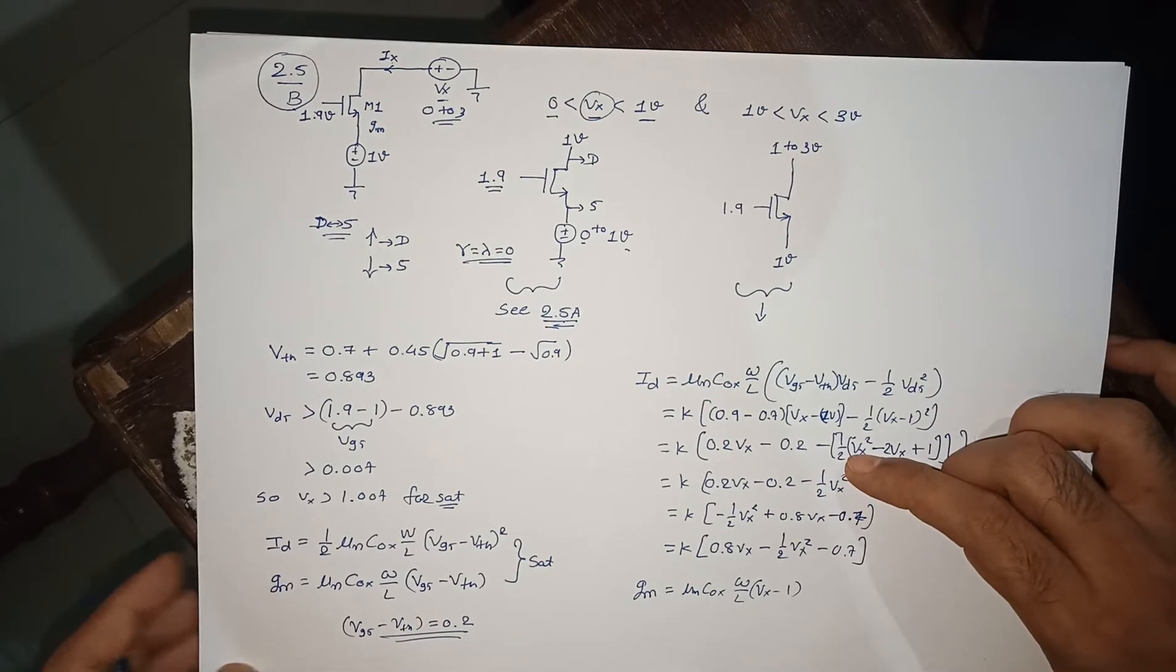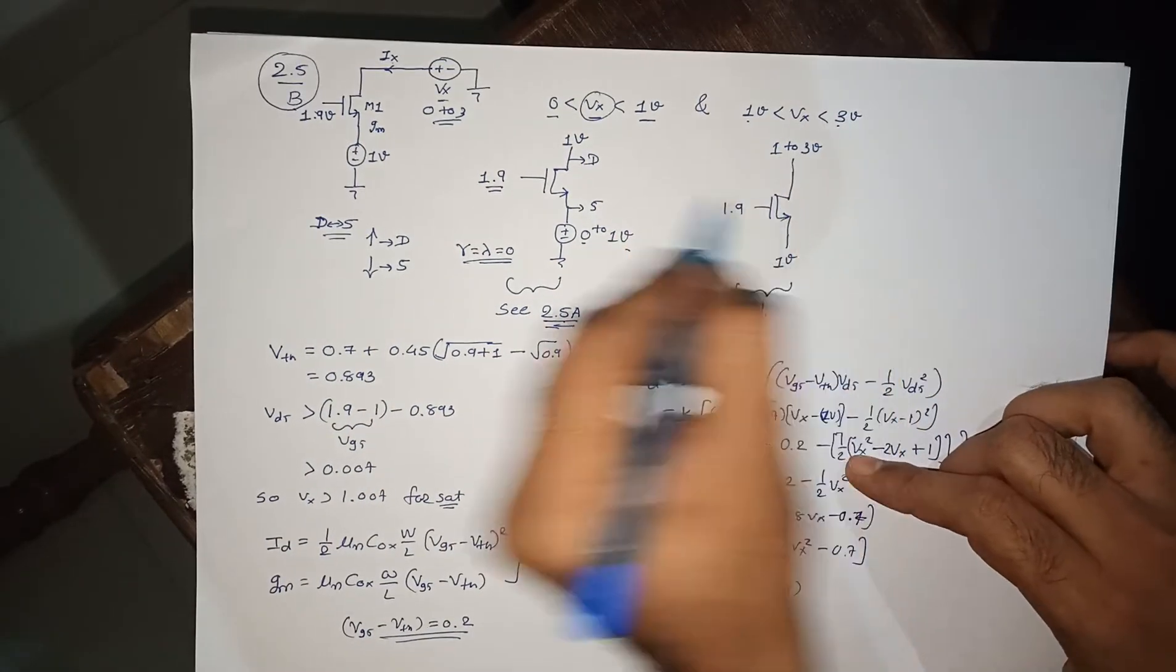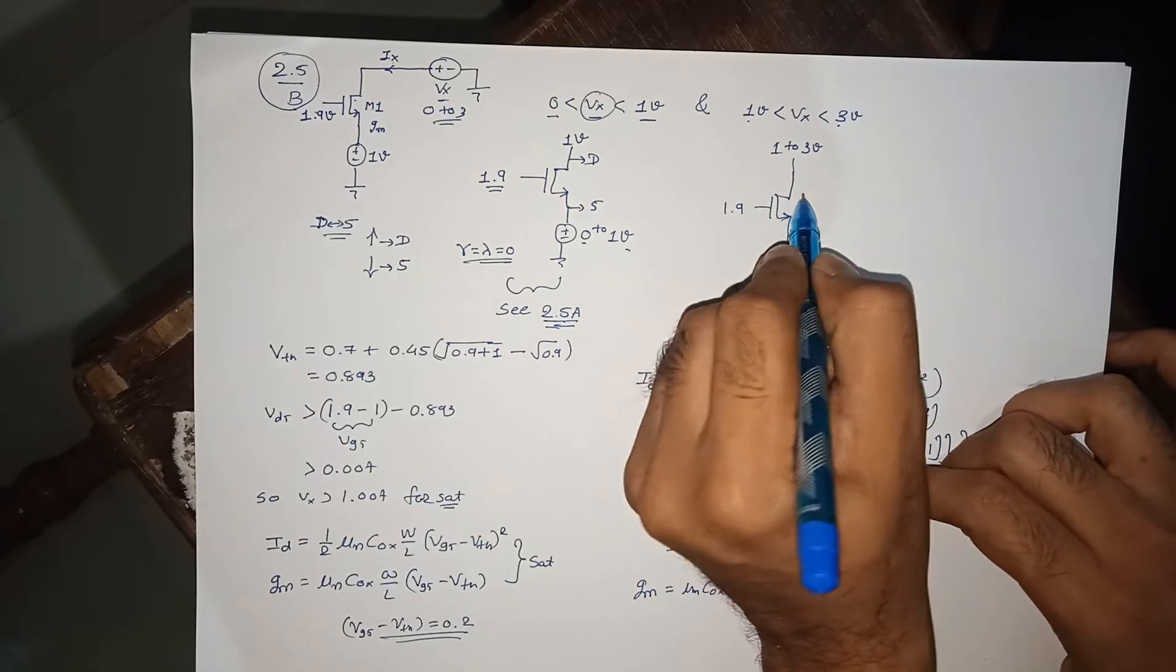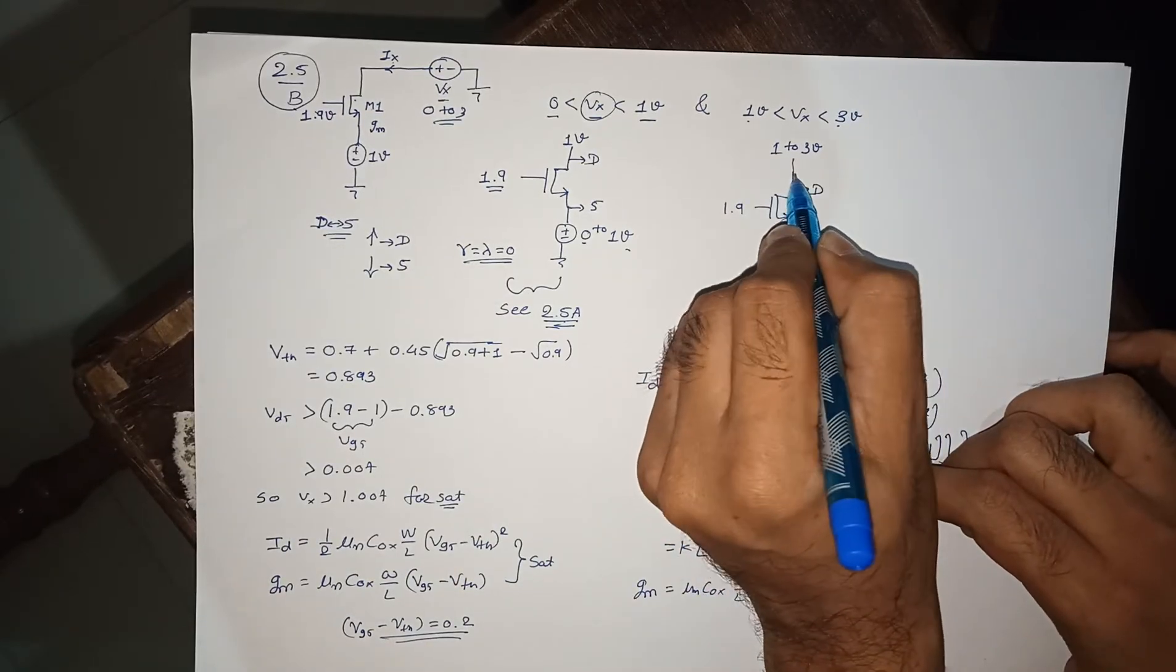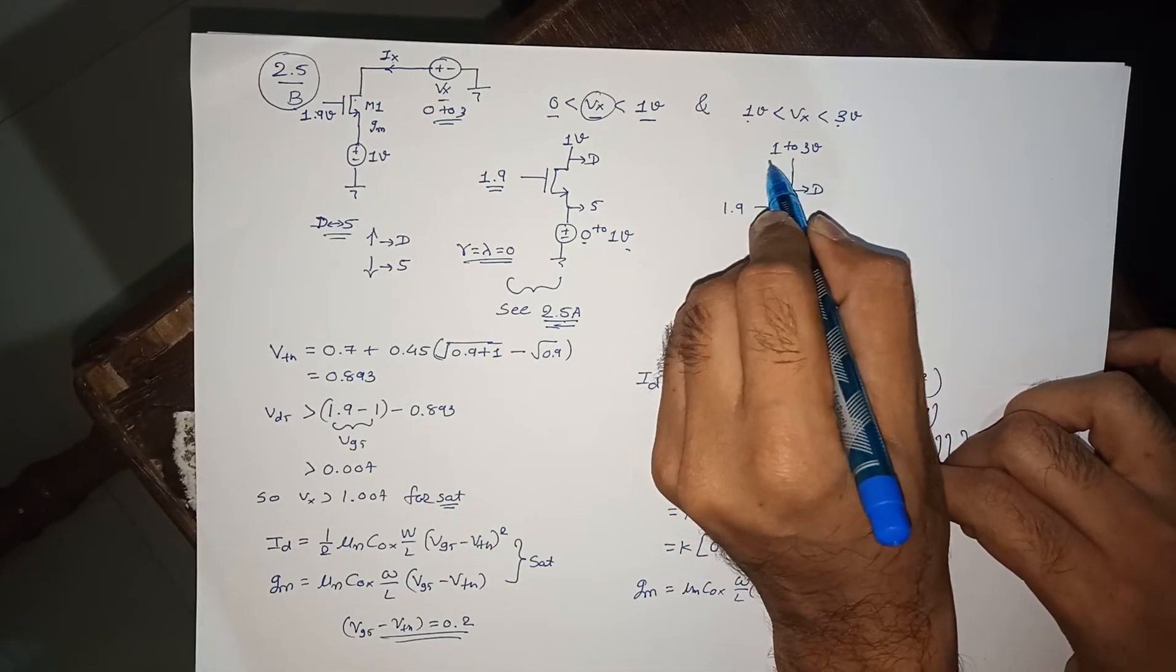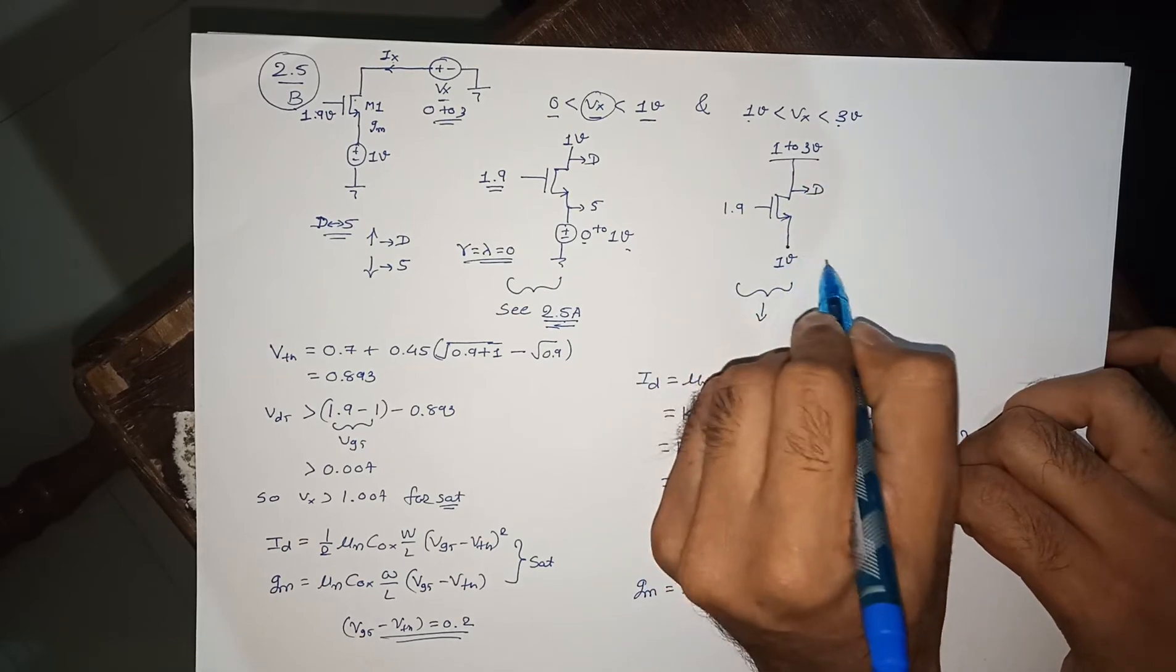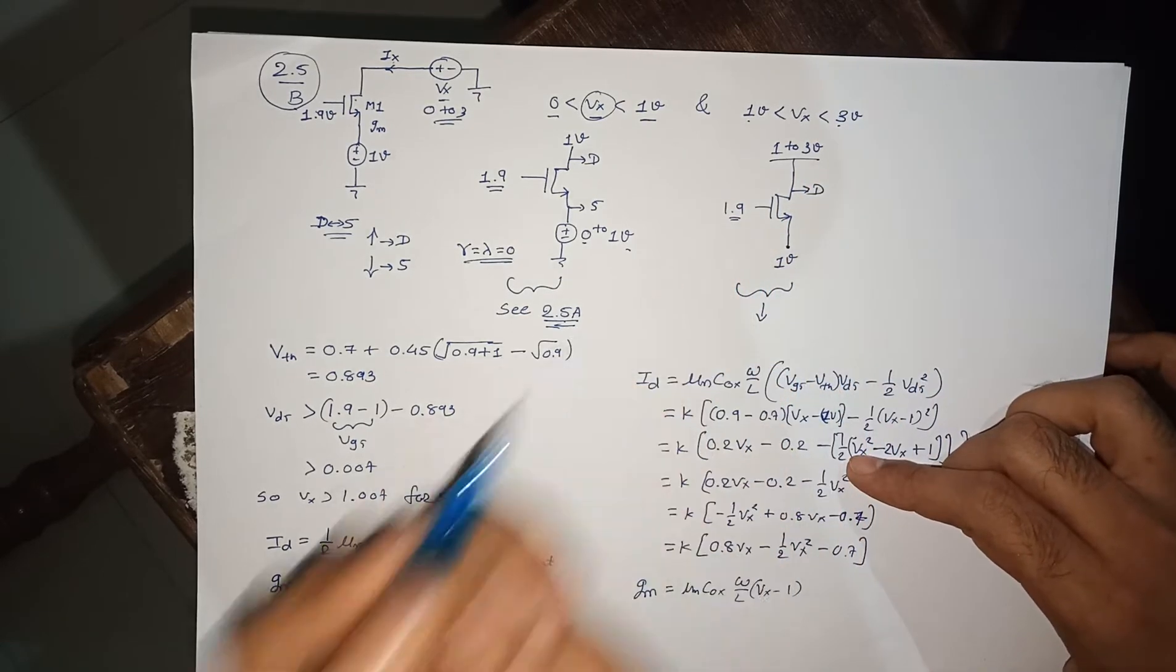For 1 volt to 3 volts, the given drain will act as a drain. So this is a drain which will be variable from 1 to 3 volts, and your source will be fixed at 1 volt. Your gate is 1.9.